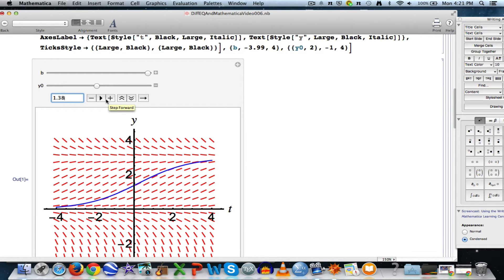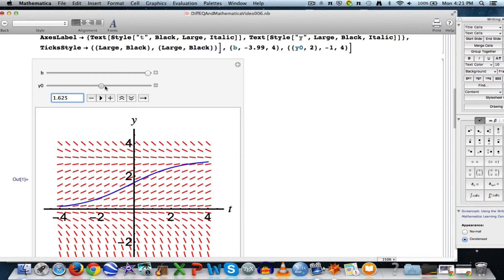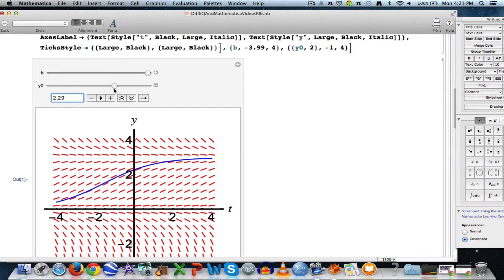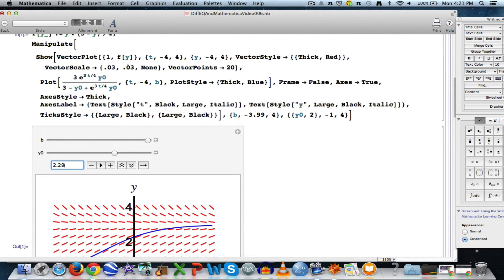And because of that, horizontal translations of solutions are new solutions. The thing I want to emphasize that's slightly different here is that if I change the initial condition, not only does the vertical axis intercept change, that's what I emphasized before, but also it is a horizontal translation of the original solution, at least if I don't cross an equilibrium solution.